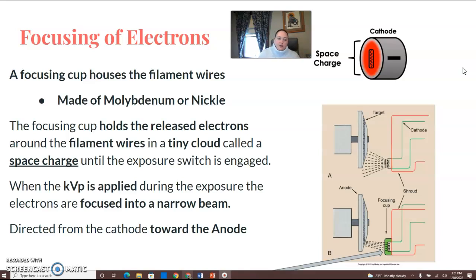When the KV is applied, the electrons move across to the anode side in a focused narrow beam. You can see in the bottom of this picture where the focusing cup is—the electrons go to that focal track on the target, which is our anode. In the top image, the electrons are not in a narrow area, so they're hitting the anode all over the place. The focusing cup focuses the beam toward the anode.